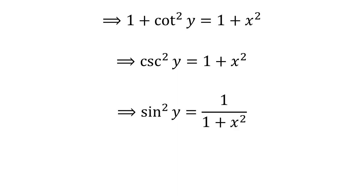The reciprocal of cosecant squared of y equals sine squared of y. So taking the reciprocal of both sides, we get sine squared of y equals 1 divided by 1 plus x squared.